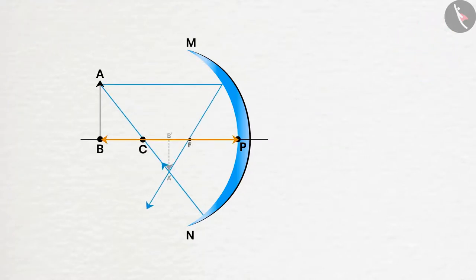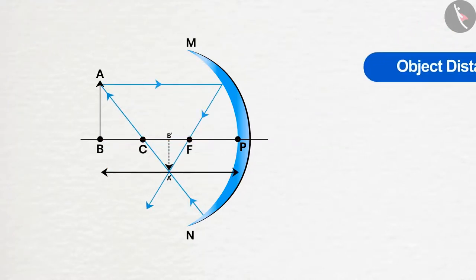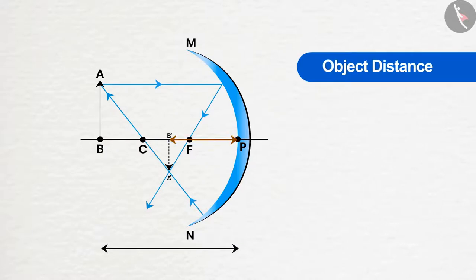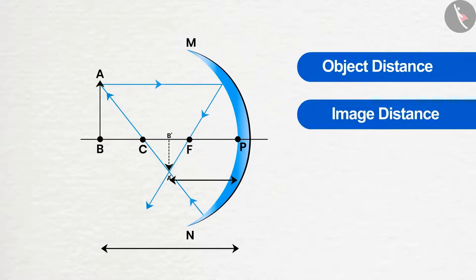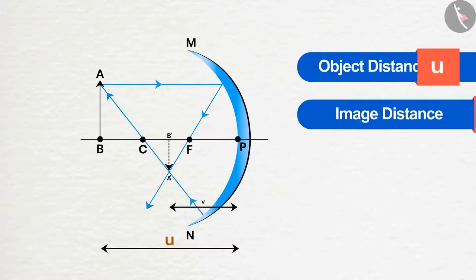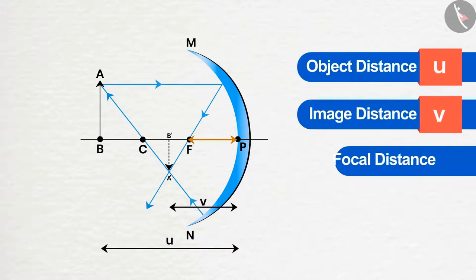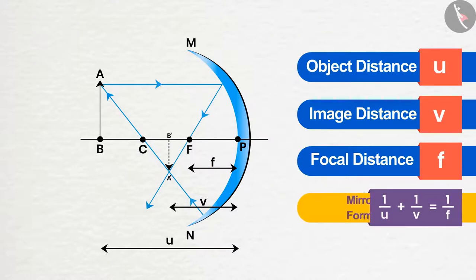The distance of the object from the pole is known as the object distance, and the distance of the image is known as image distance, represented by the symbol U and V. If focal distance is represented by F, then the relation of these three quantities is known as mirror formula.